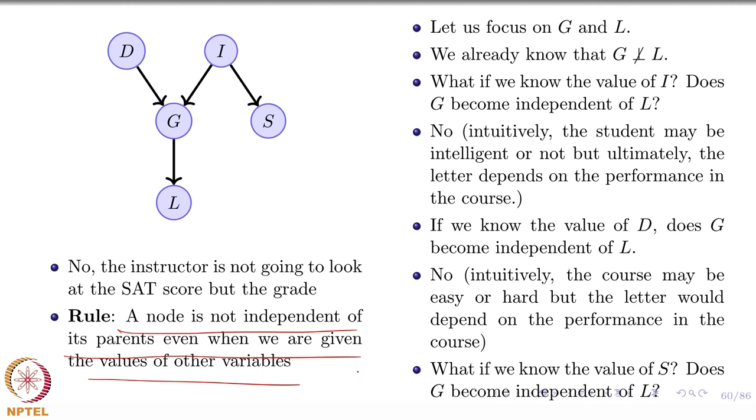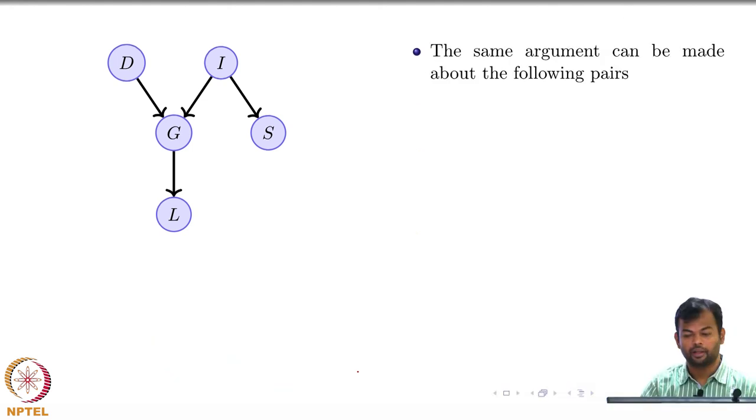But the reason I have brought this extra clause is because we will see that in some other cases, this does not hold when the parent and child relation does not hold. So for now, we have established the rule for what happens to a node and its parents. They are always dependent, is what we have actually achieved, and we have just written it differently: that a node is not independent of its parents even when you know the other random variables.